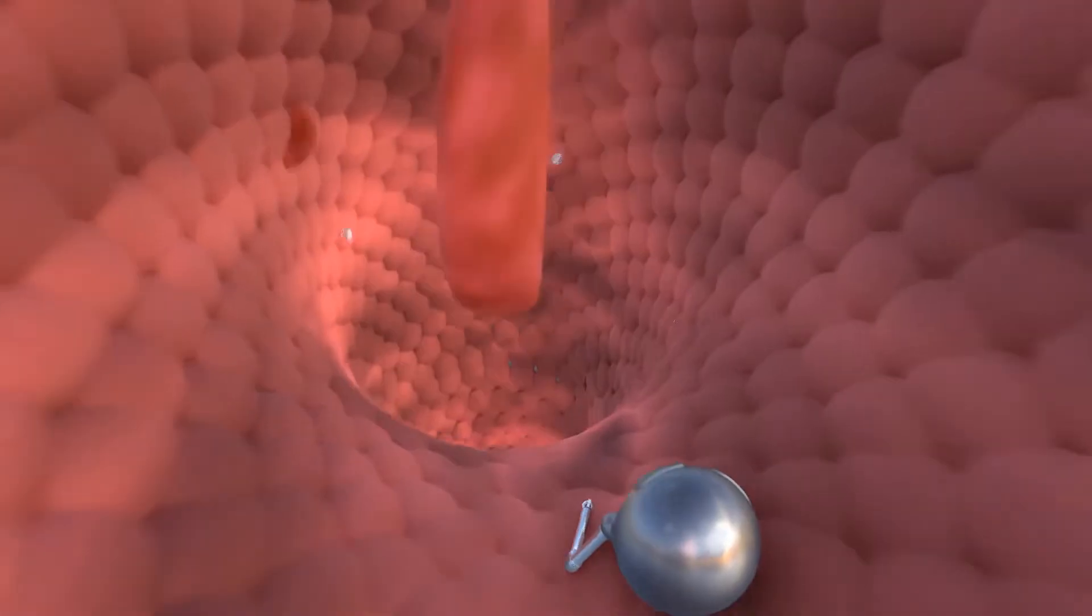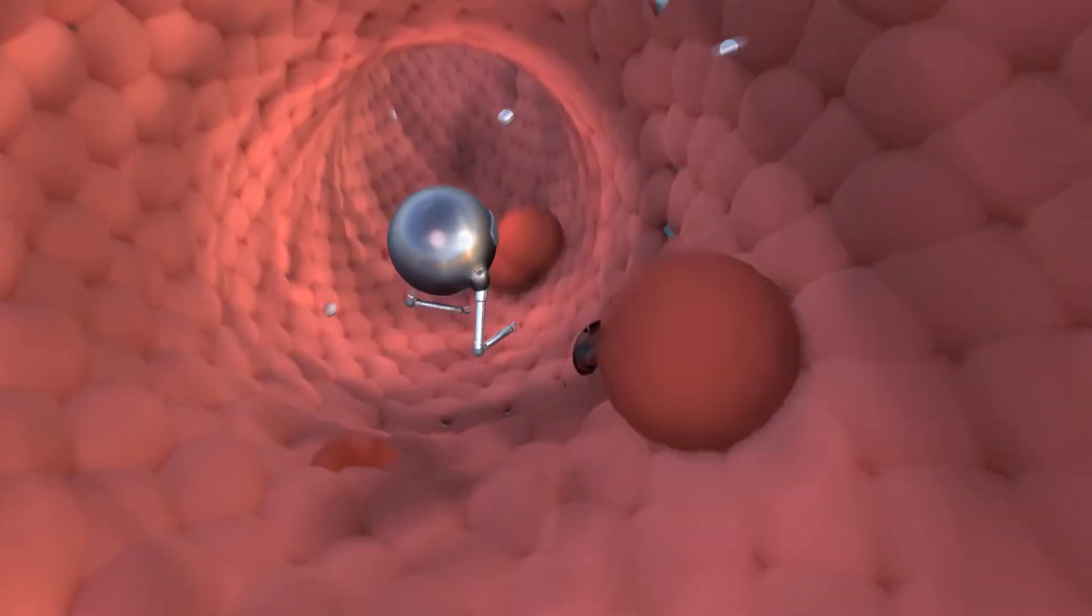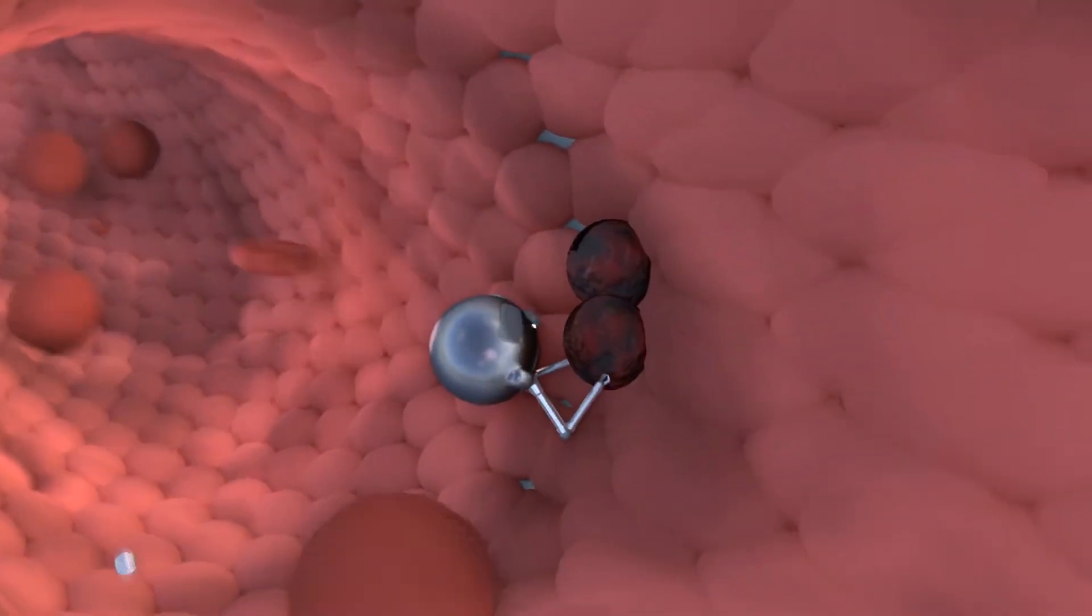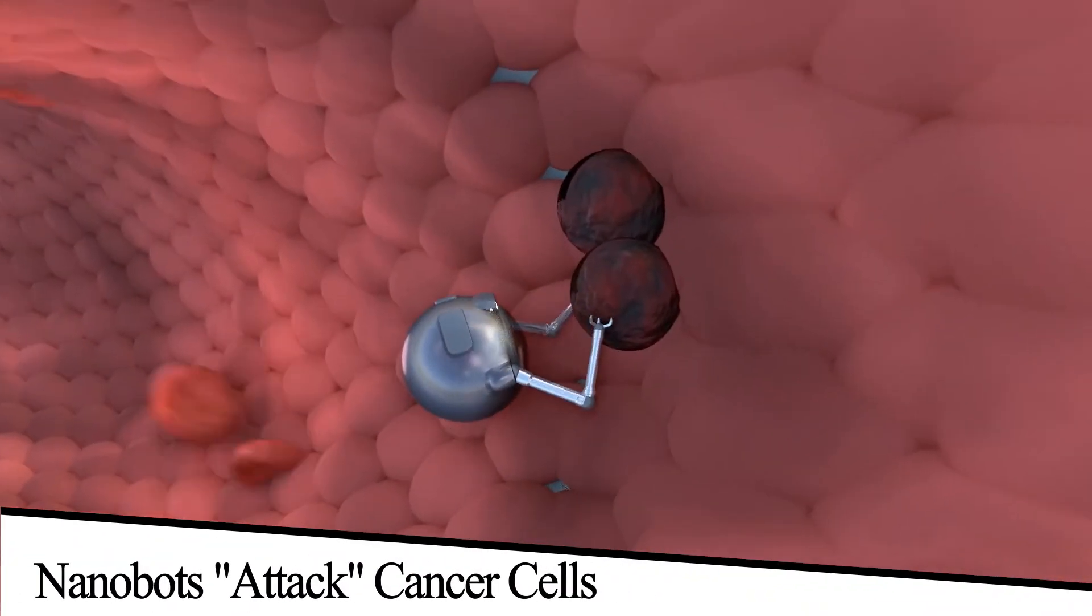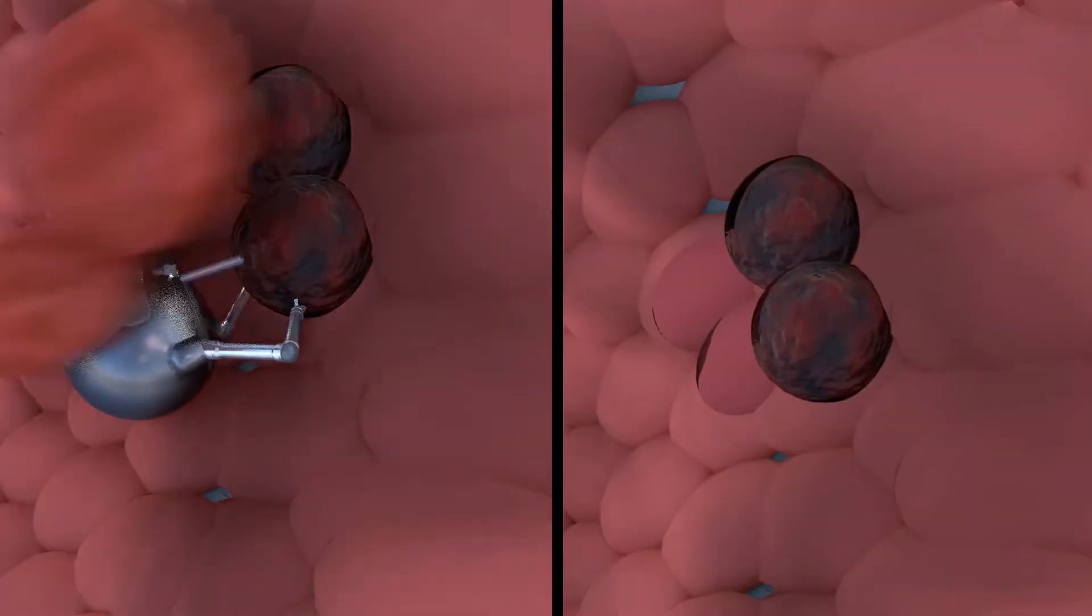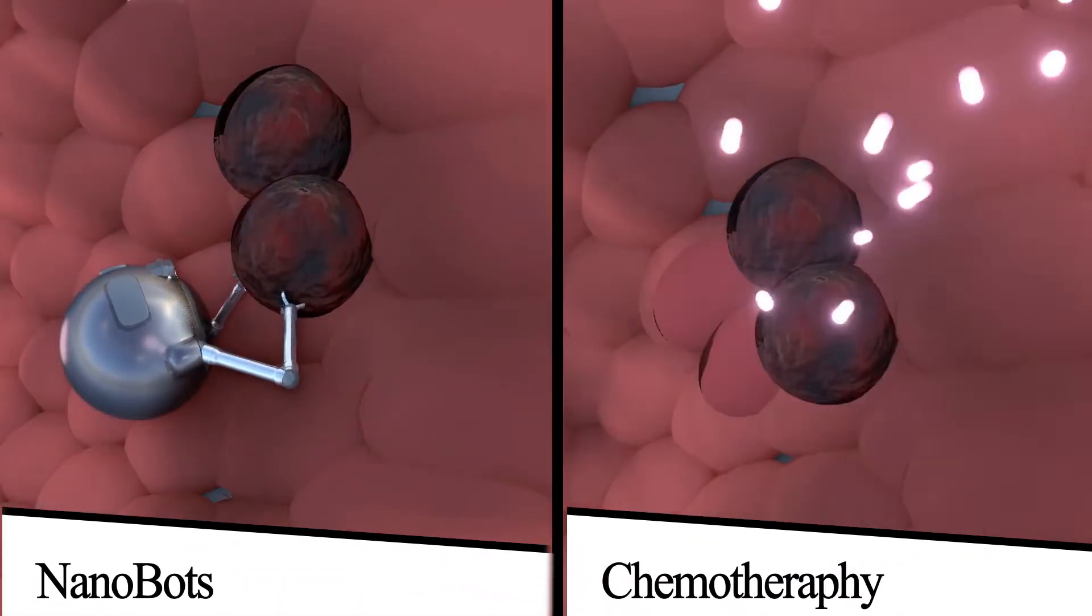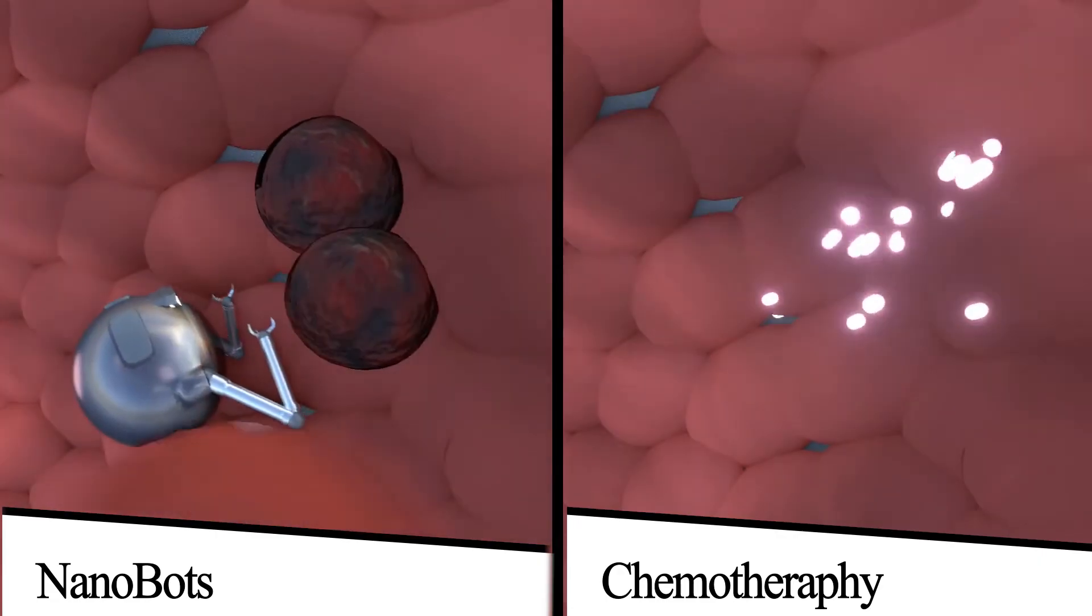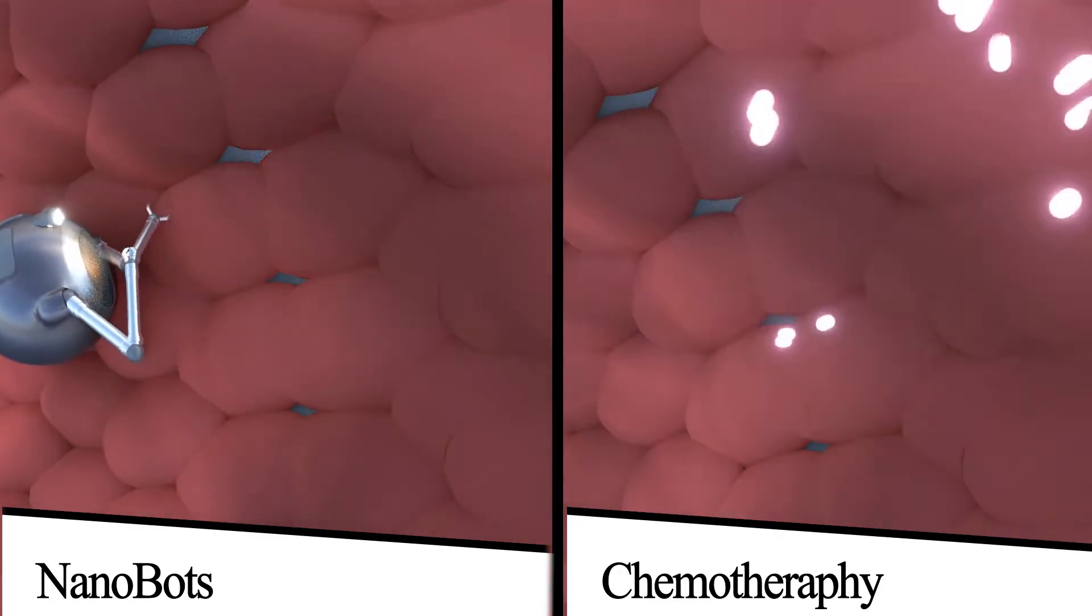For example, in the case of cancer, nanobots can attach themselves to the cancer cells and inject medicine directly into the cells, destroying cancer without harming healthy cells, like in the case of methods such as chemotherapy, where the surrounding healthy cells are killed during the process.